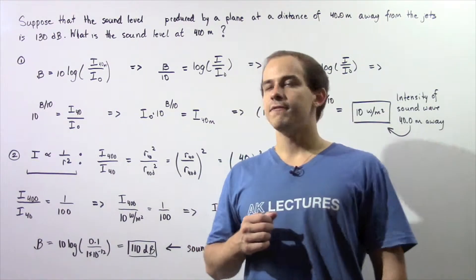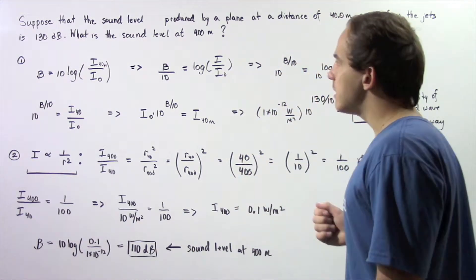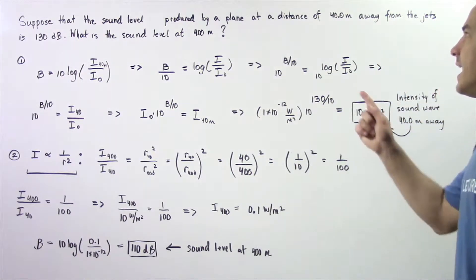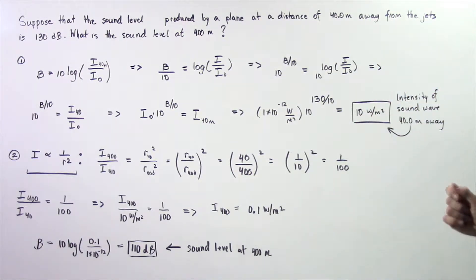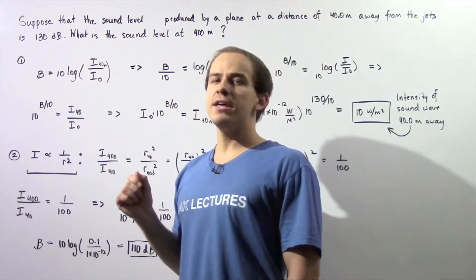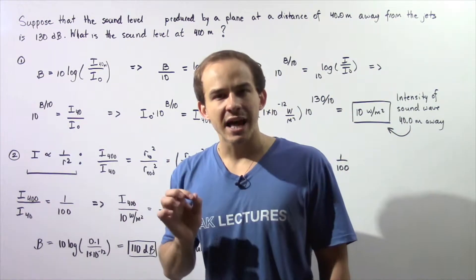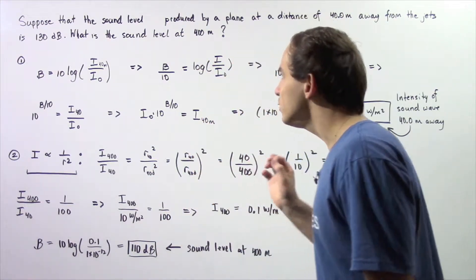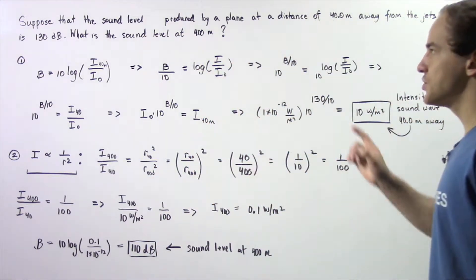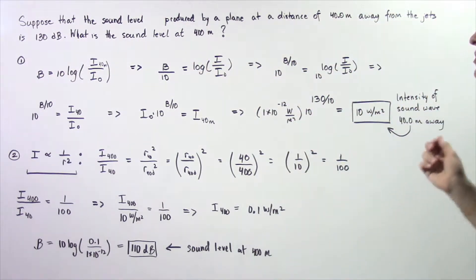Let's look at the following example. Suppose that the sound level produced by a plane at a distance of 40 meters away from the jets is 130 decibels. Knowing this information, we want to calculate what the sound level is at a distance of 400 meters away from the jets of the plane.